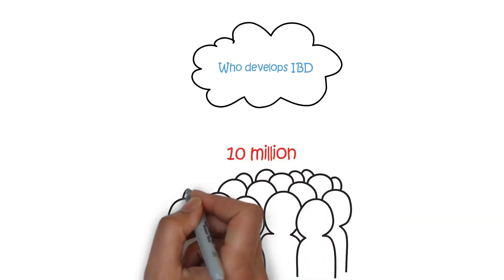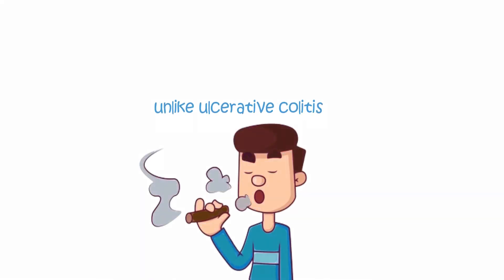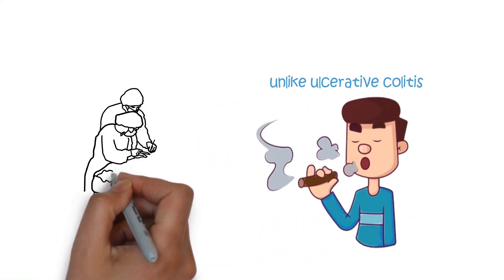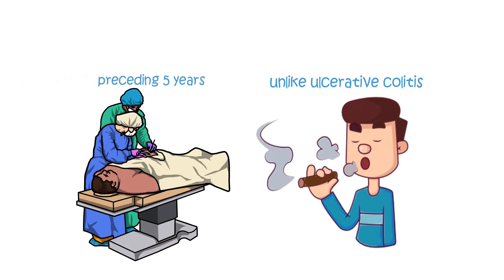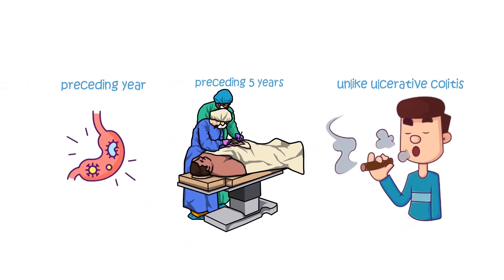Who develops IBD? Globally, around 10 million people worldwide are living with IBD, which means either ulcerative colitis or Crohn's. It usually affects ages between 15 and 30. It is more common in people that smoke, unlike ulcerative colitis. It is also known to be slightly more common in people who have had their appendix removed in the preceding five years or have had an episode of gastroenteritis in the preceding year.